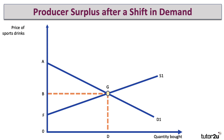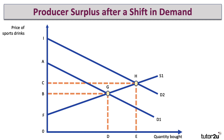There's our initial equilibrium where the price of drinks is B and the quantity bought and sold is D at equilibrium G. There's a big increase in demand, reflecting the fact that more people are willing and able to pay for these products. So D1 shifts out to D2. The consequence is that the market price goes up from B to C and the quantity bought and sold goes up from D to E. An outward shift in demand causes an expansion up and along the supply curve from G to H, giving a new equilibrium price of C and a new equilibrium quantity of E.